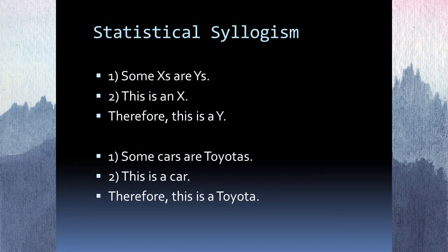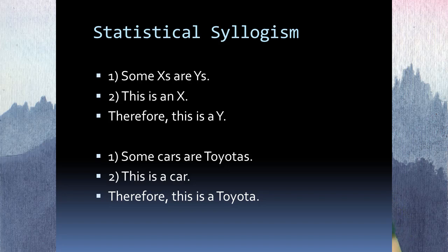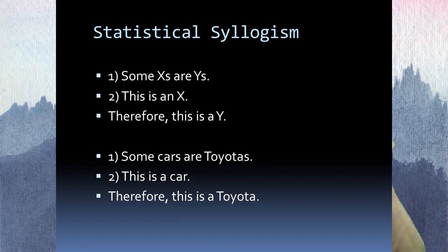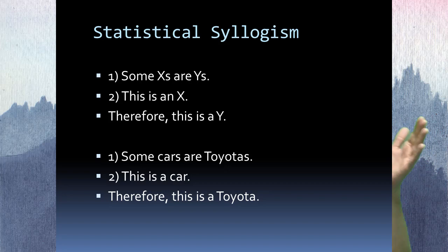For a statistical syllogism, the basic argument form is: some X's are Y's; we have an X here; so this thing is also a Y. It could be 'most' — it would never be 'all' or 'none.' The concrete example: some cars are Toyotas; this is a car; so it must be a Toyota. It's similar in style to a deductive syllogism, except it's induction. The words 'some' and 'most' completely distinguish it as inductive rather than deductive.